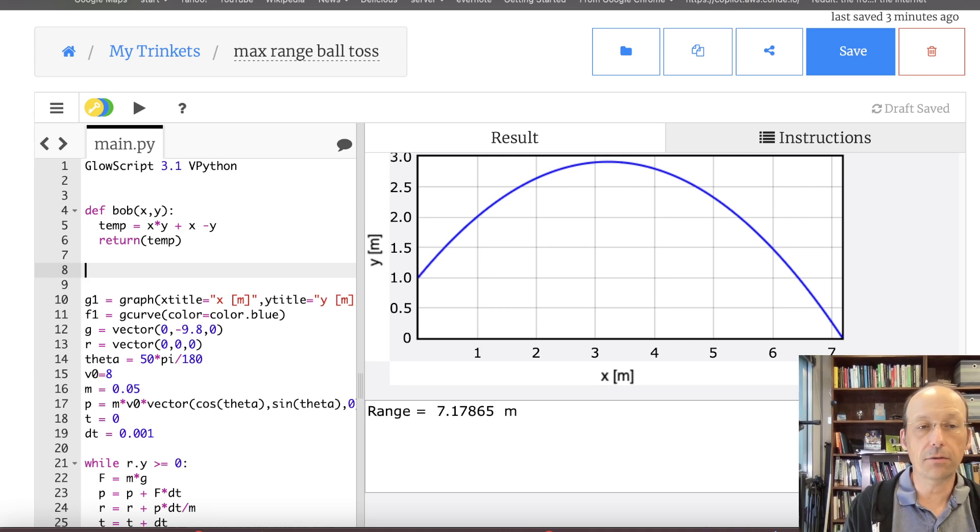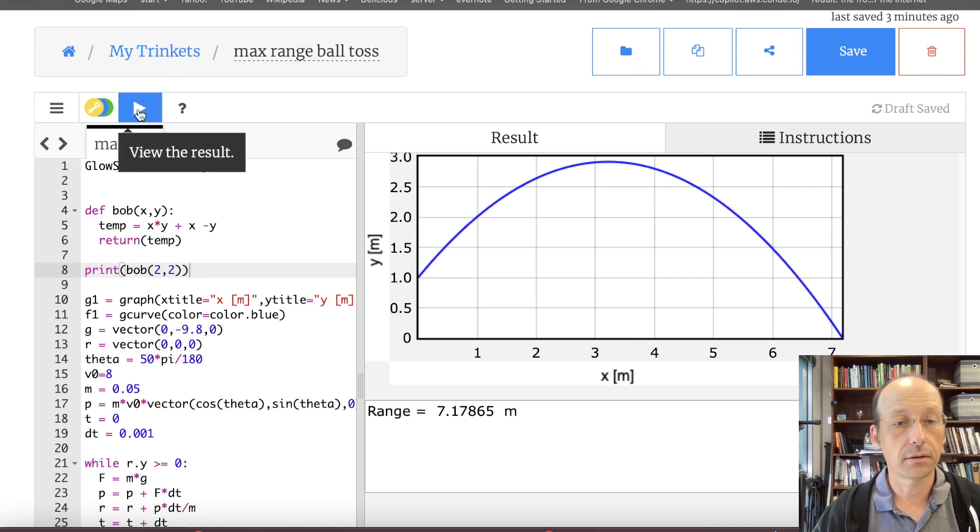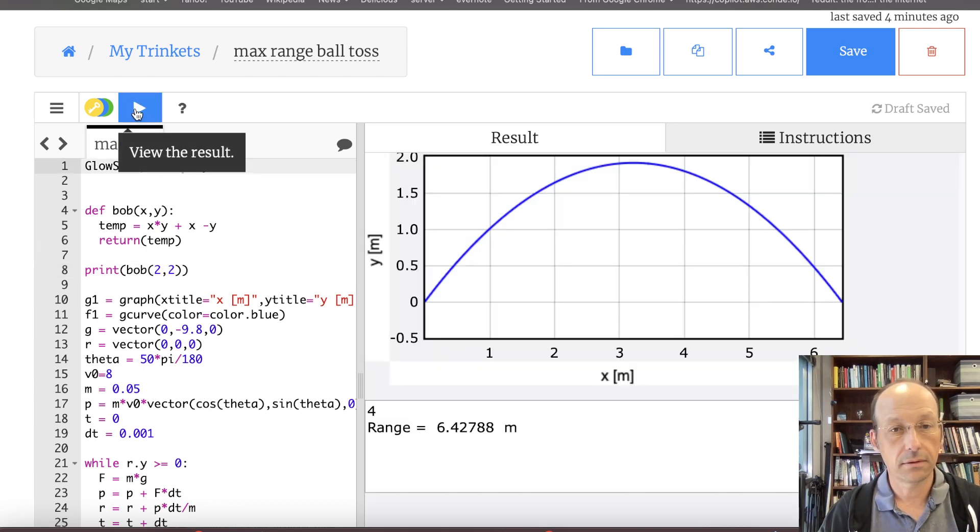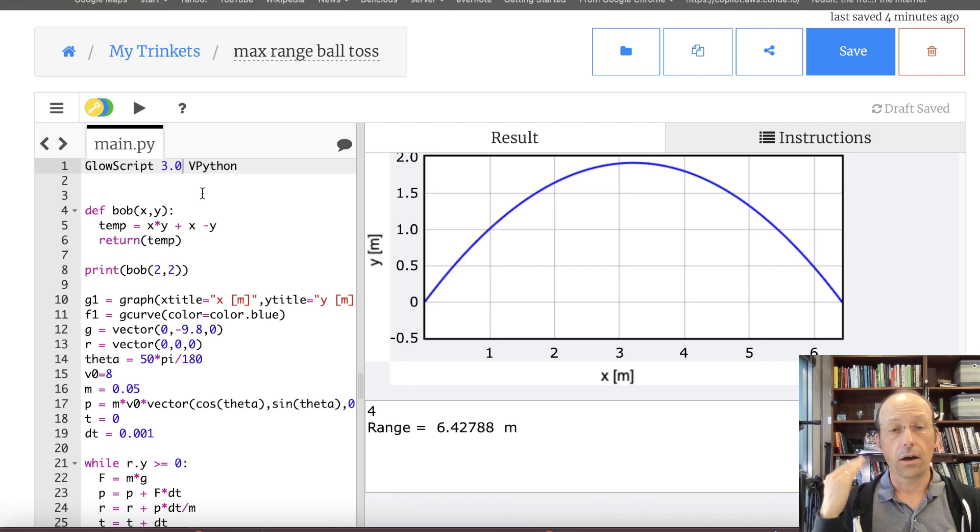Now whenever I do something like this, bob two two, let's print that. Print bob two two. This is going to take X is equal to two, Y is equal to two. So it's two times two is four, plus two minus two. So it should return four. So if I print this, I should get four. And it didn't work. If I change this to zero. Yeah. Okay. There's something weird with GlowScript, the newer one. I'm not sure what the problem is. But it's working now. That is your very first function.